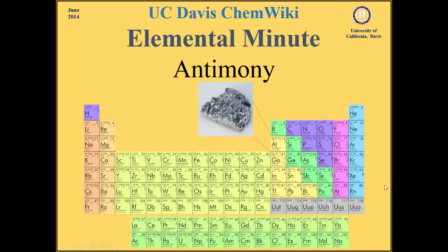Antimony is located in the middle right of the periodic table. It has an atomic number of 51 and an average atomic mass of 121.76. It is in the nitrogen group.